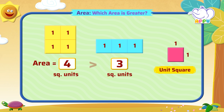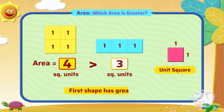Four square units is greater than three square units. So the first shape has a greater area. Excellent!